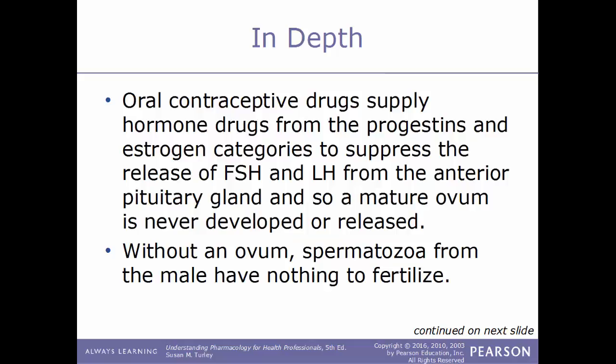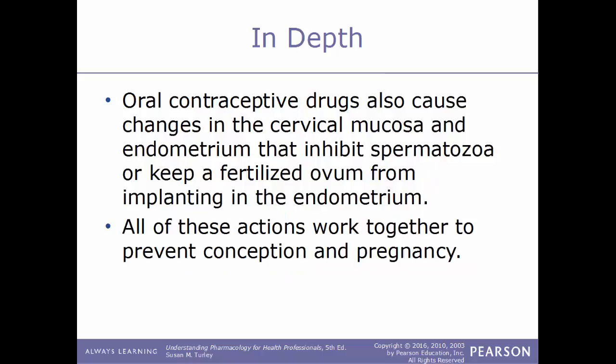Oral contraceptive drugs supply hormones from the progestin and estrogen categories to suppress the release of FSH and LH from the anterior pituitary gland, so a mature ovum is never developed or released. Without an ovum, spermatozoa will have nothing to fertilize and pregnancy is prevented. Oral contraceptives can also cause changes in the cervical mucosa and endometrium that inhibit spermatozoa or keep a fertilized ovum from implanting within the endometrium.